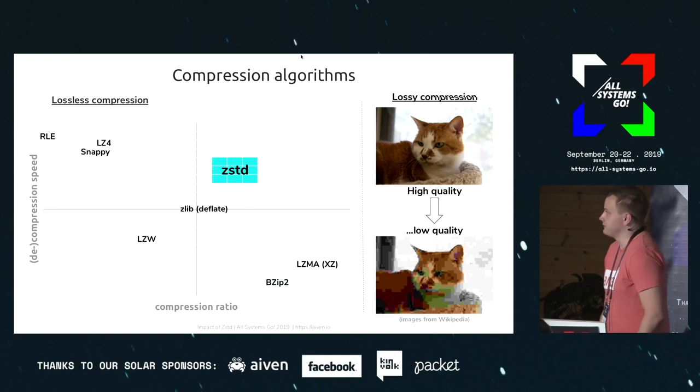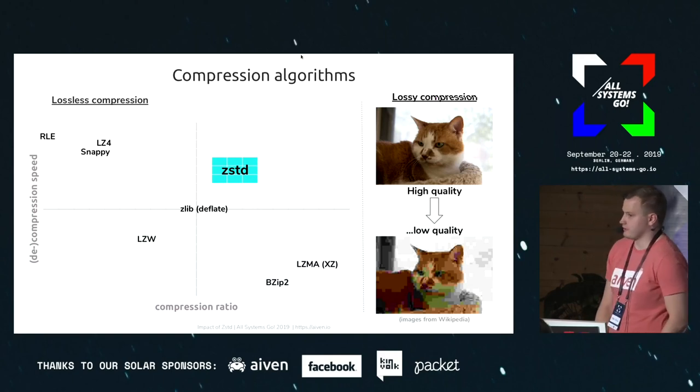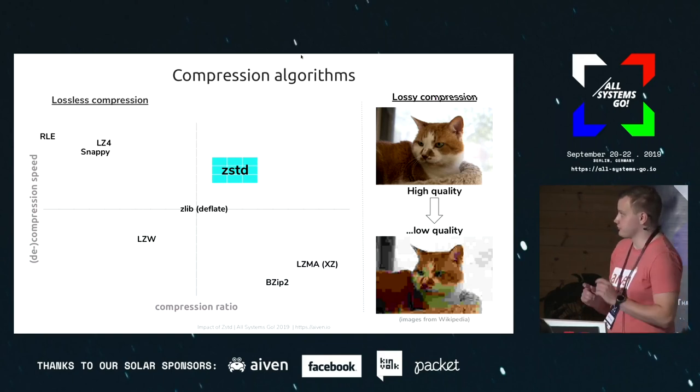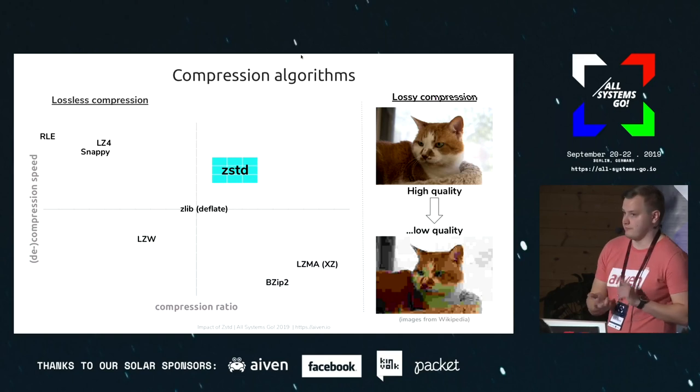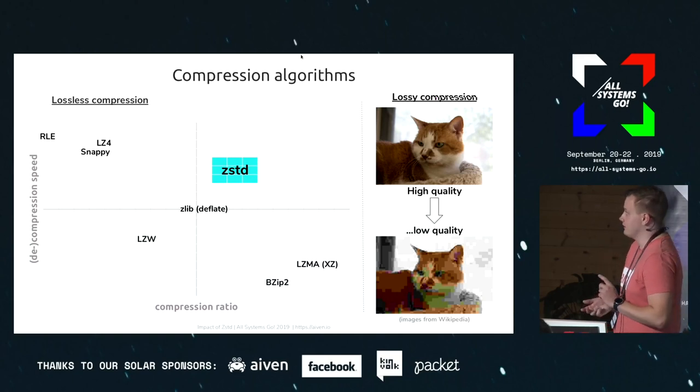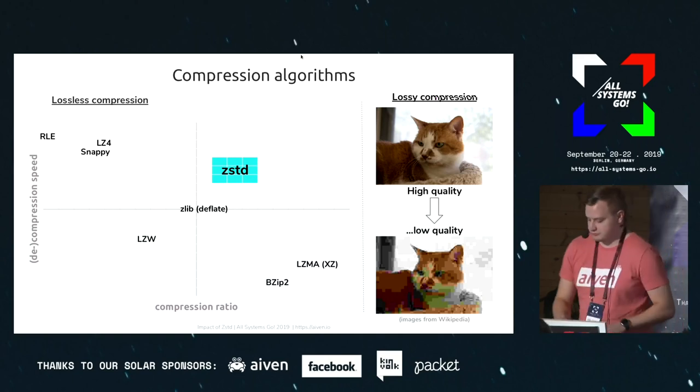zStandard is pretty much the best of both worlds. It offers really fast compression, even faster decompression, and it has a really great compression ratio.